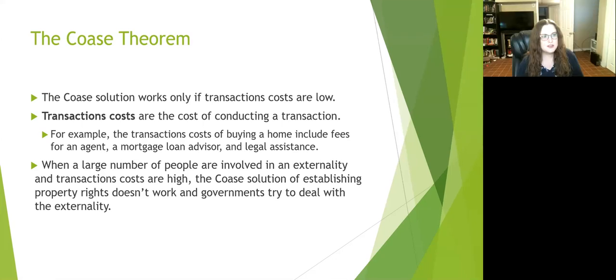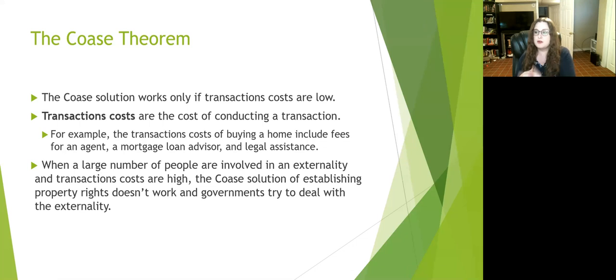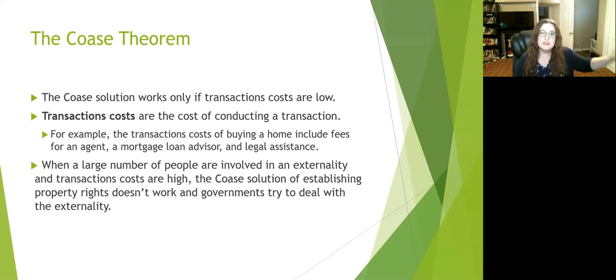Let's continue with chapter 17. When we left off, we had just started talking about what property rights mean and the big picture of externalities. Remember that externalities are bits of cost or benefit happening externally to someone outside of a transaction — the additional cost or benefits happening to people outside of the system.